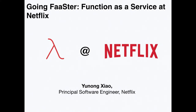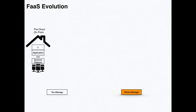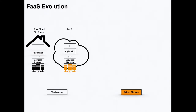Before we talk about Function as a Service, let's talk about its evolution in cloud computing. In the very beginning, everyone owned their own data centers — the literal walls, machines, services platform, application, and business logic. Then in the 2000s AWS came along, offering Infrastructure as a Service, abstracting away the data center so you could provision using EC2 — but you were still responsible for the services platform, application, and business logic.